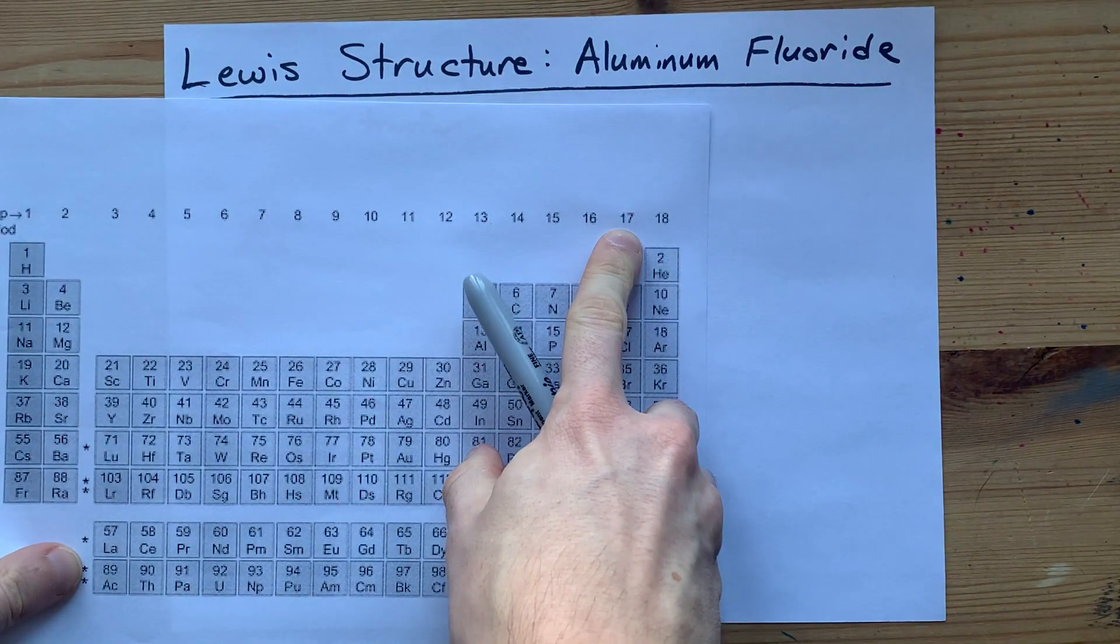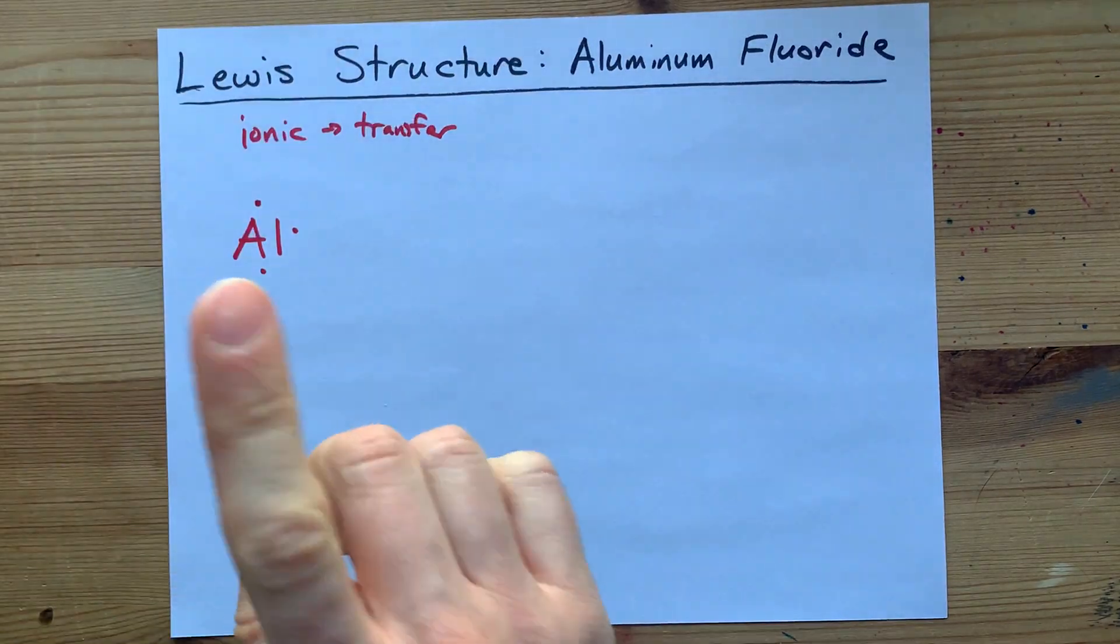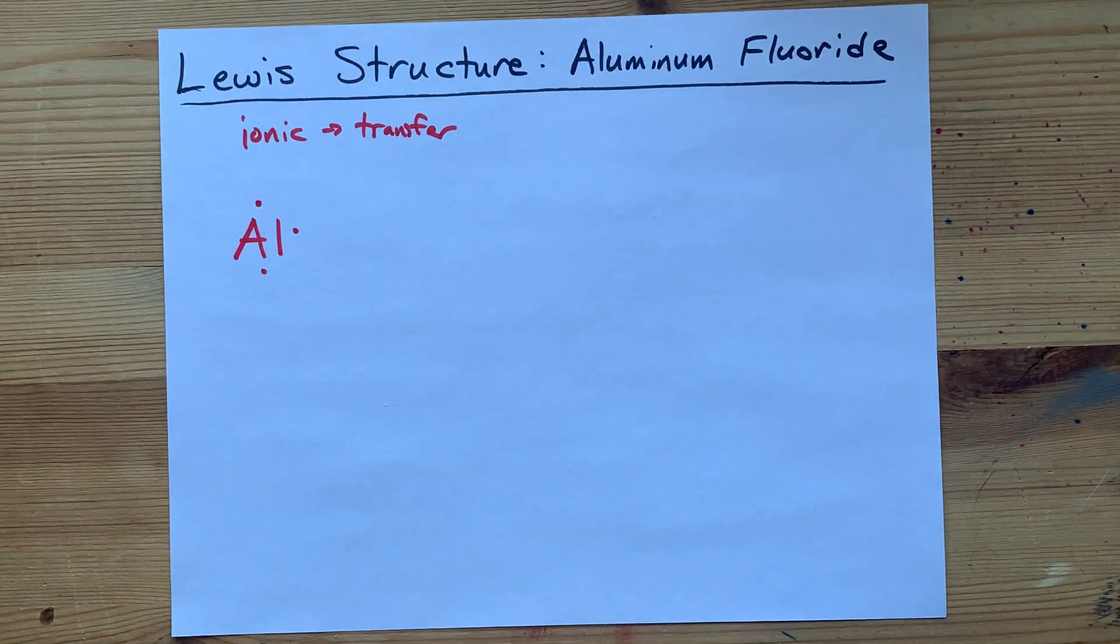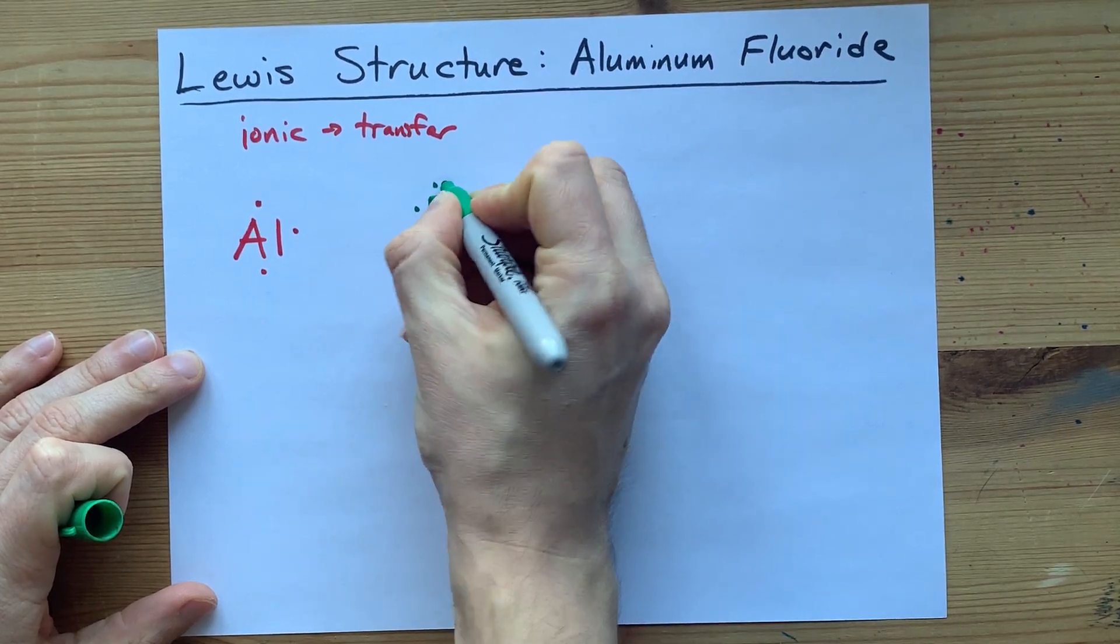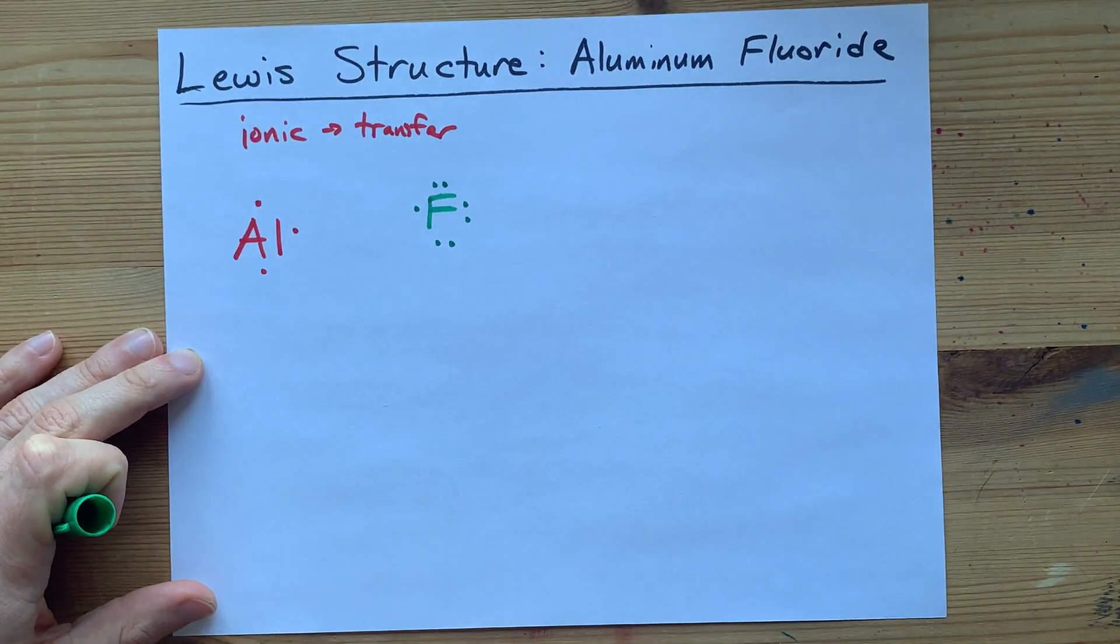And fluorine is in group 17. That means it brings seven valence electrons with it. So I'll draw my F: one, two, three, four, five, six, seven valence electrons.